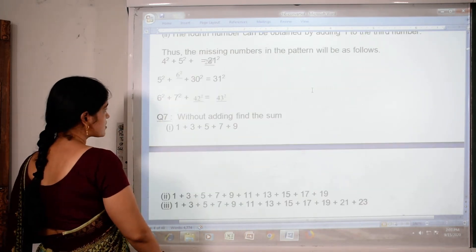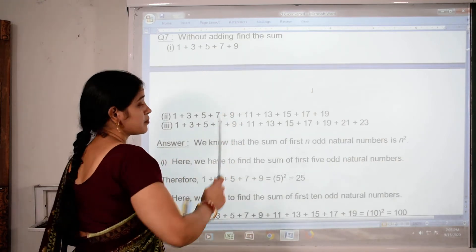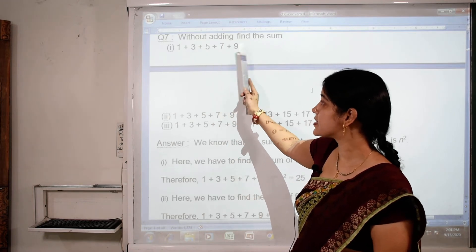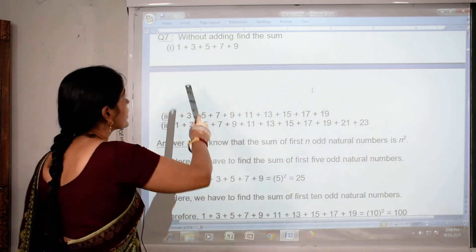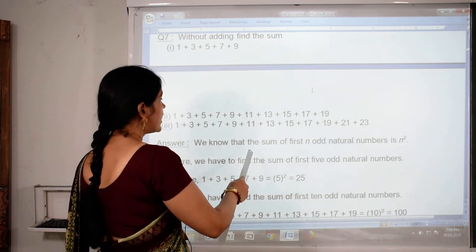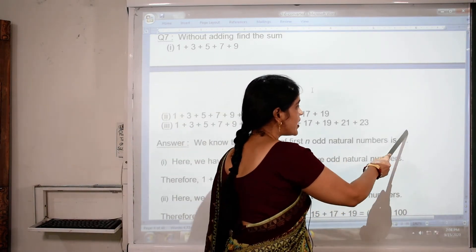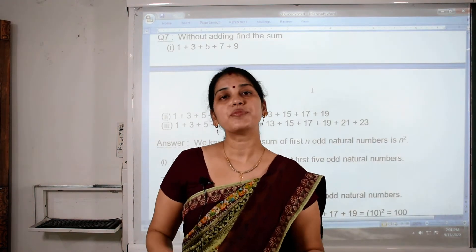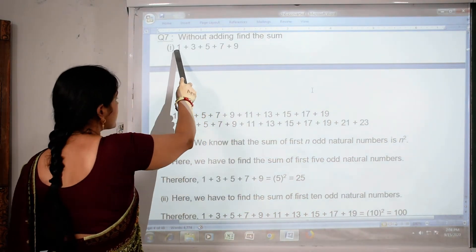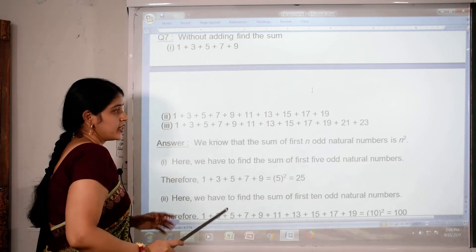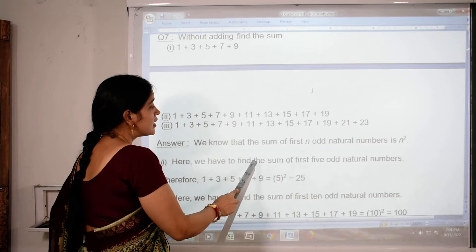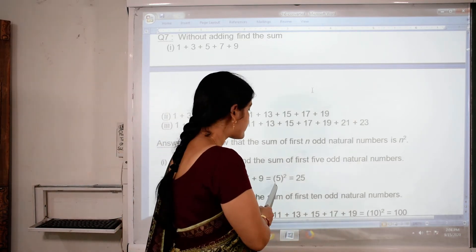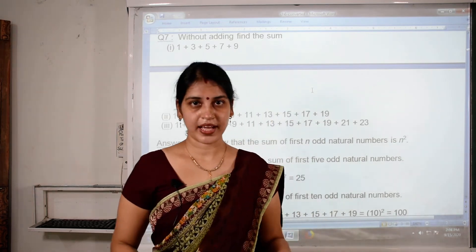Next question: Without adding, find the sum. Here we observe odd numbers: 1, 3, 5, 7, 9. Whenever we add first n odd numbers, the sum is always n squared. How many odd numbers are given? There are 5 odd numbers. So the sum of the first 5 odd numbers is 5 squared, which equals 25.